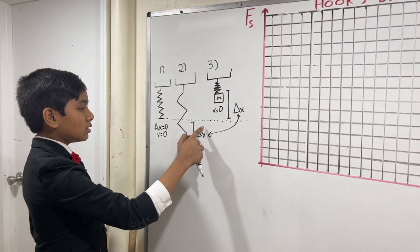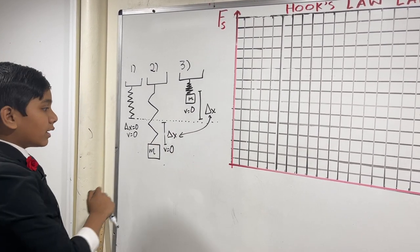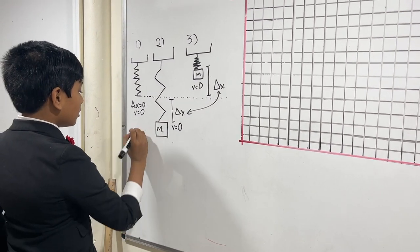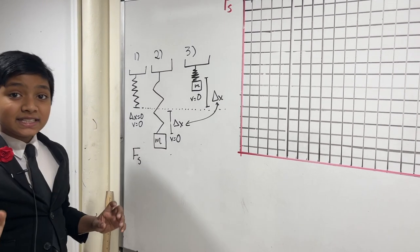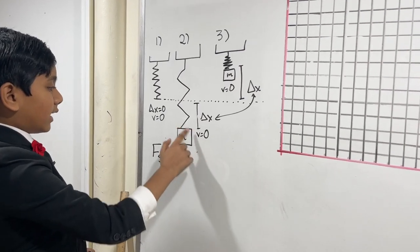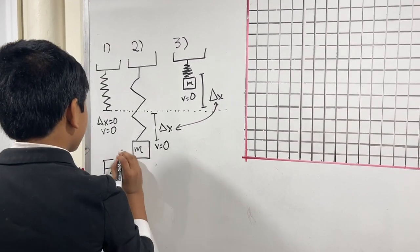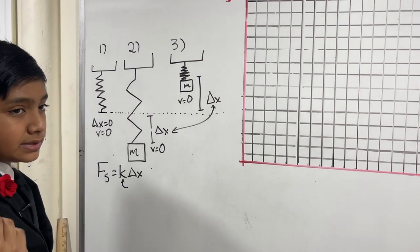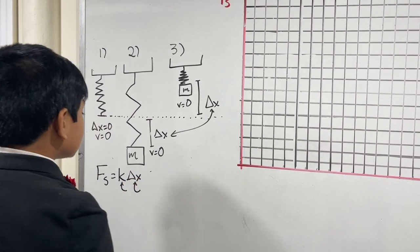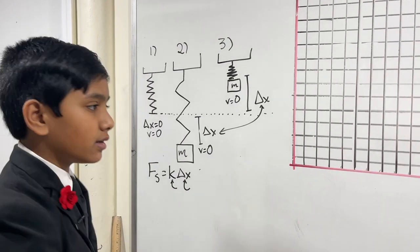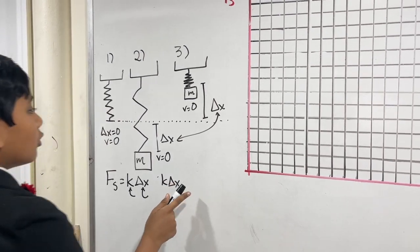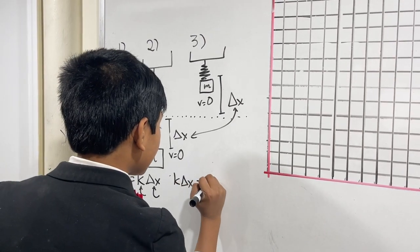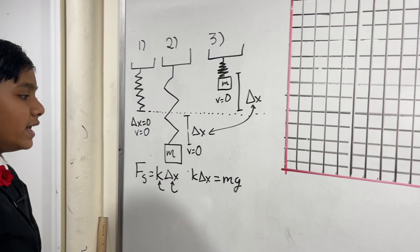So, at the extremes, the velocity is 0. And now, it oscillates back, and the block pushes up against the ceiling. And once again, this is very far from our equilibrium position. And if there was no damping, then you could say that this distance is also the same delta x, and the velocity is 0.